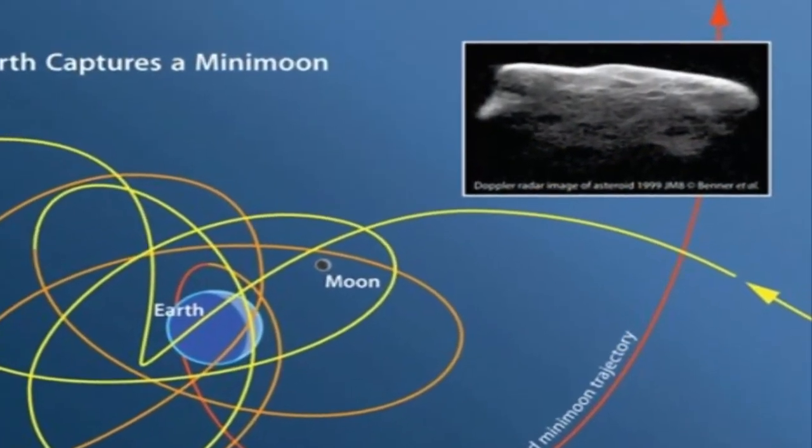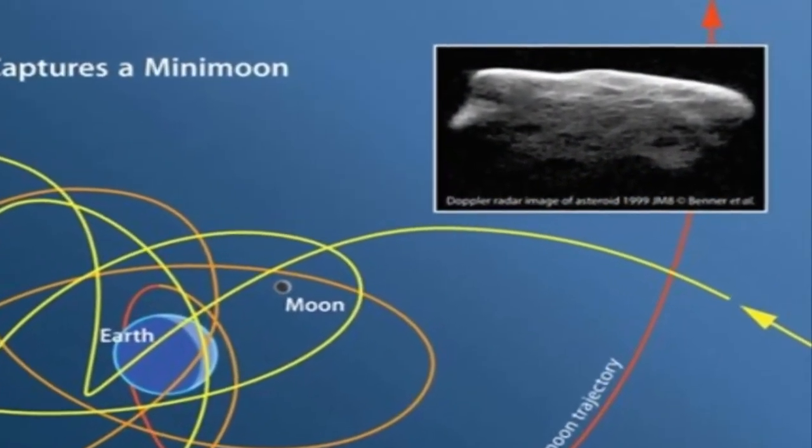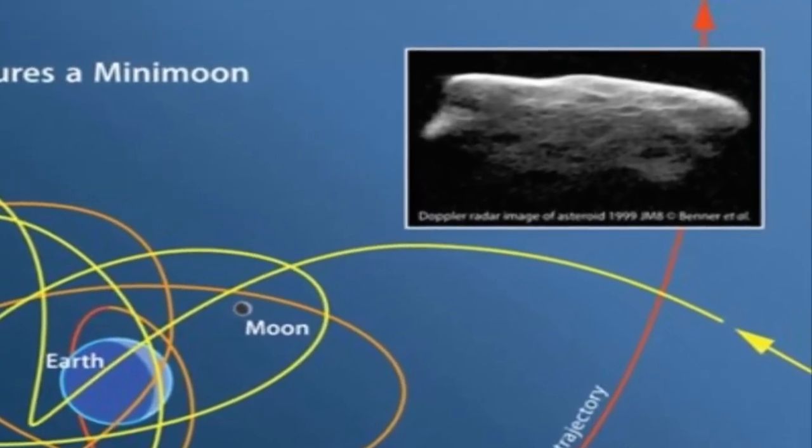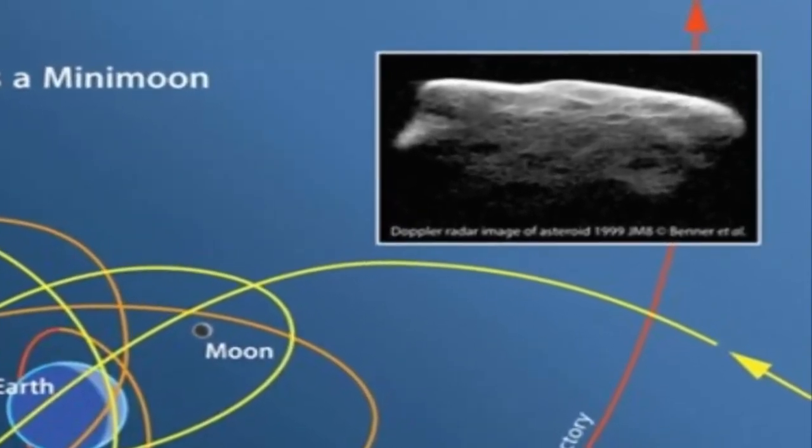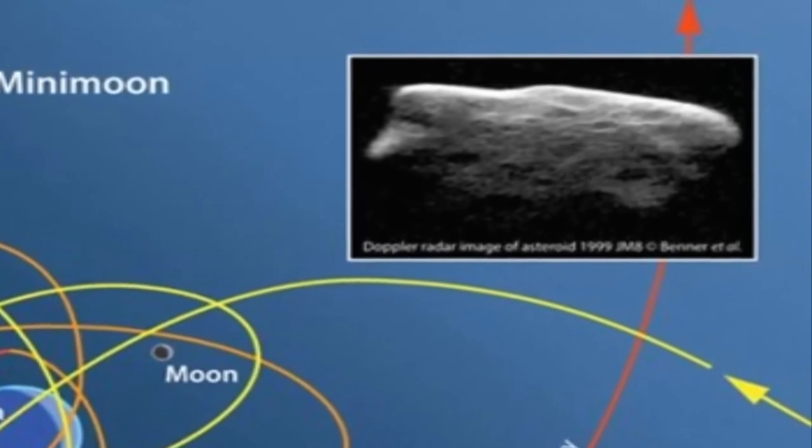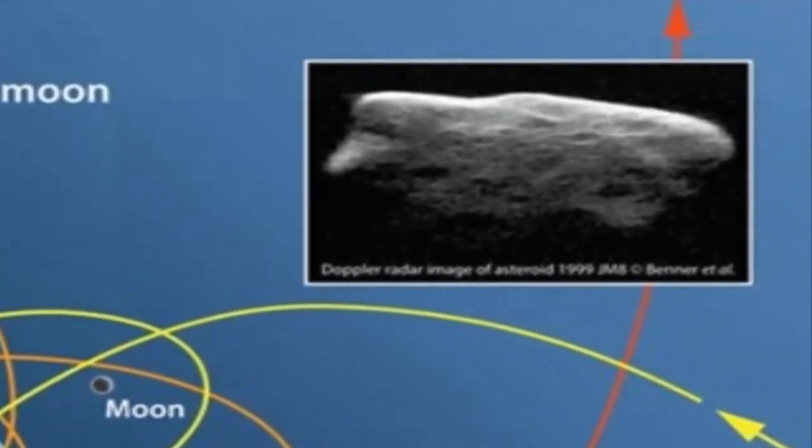Namun astronomer menemukan bulan mini ini hanya sementara dan akan segera meninggalkan orbit bumi dalam waktu dekat. Bulan mini ini pertama kali menjadi tetangga bumi sekitar 3 tahun lalu.